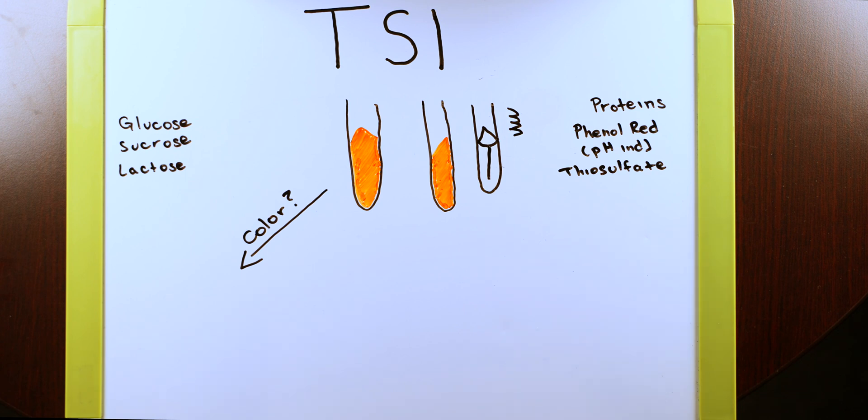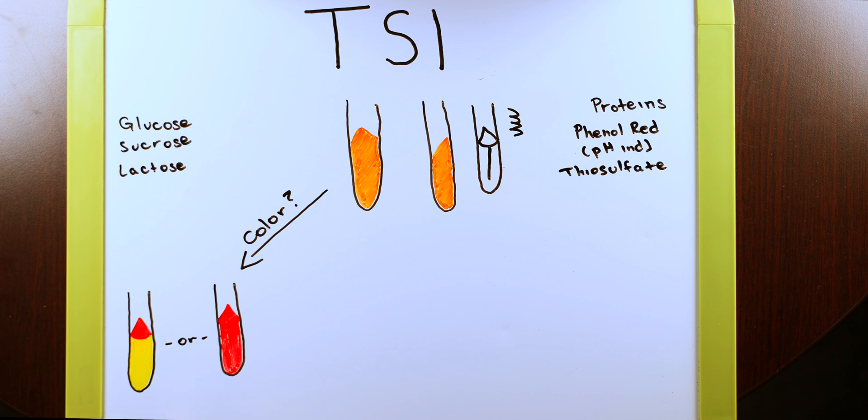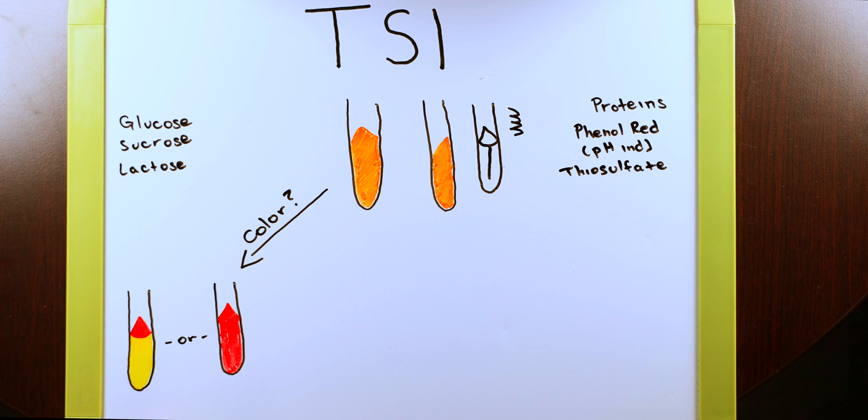You're going to notice that your media did one of two things. It's going to go from this orangish kind of color, maybe it's even pink, to either a red or an orange color change. And here you can see the two results that we could have as far as a color change. One is we have a red top and a yellow bottom or completely red test tube. This one over here indicates to us that the proteins were used as an energy resource at the top and that the sugars were used as an energy product down in the bottom. This is because when we do carbohydrate metabolism, we have acid end products, which gives us this yellow color.